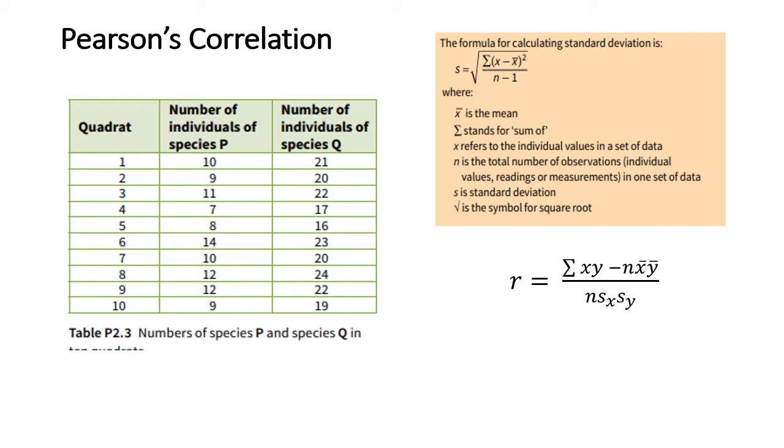For the example I'm going to demonstrate, I have taken one from the textbook, the Cambridge AS and A-level biology coursebook by Mary Jones et al. In this example on page 501, it has the quadrat. The quadrat doesn't feature in this formula, but it tells you the number of data points you have. The number of quadrats is equal to n. So in this case, we have 10 quadrats, so n is equal to 10 for our example here.